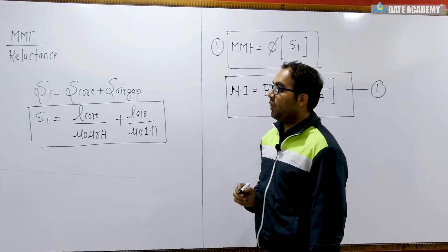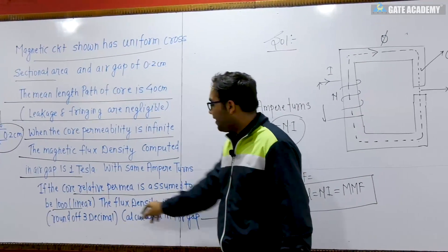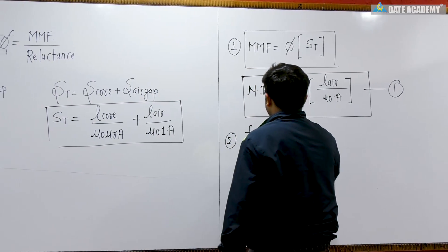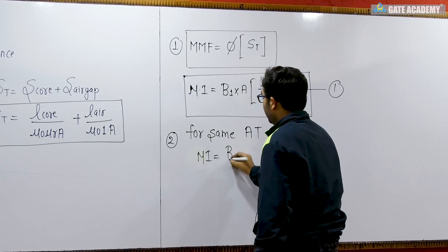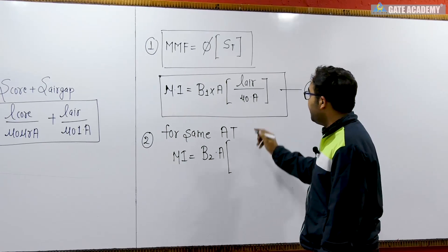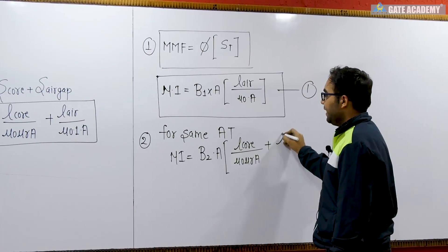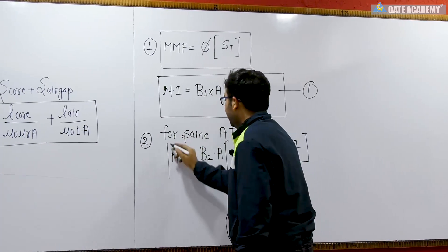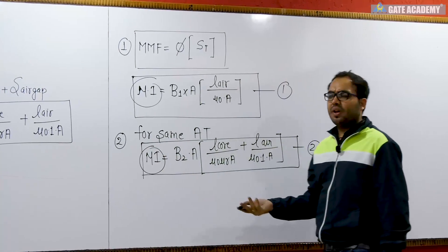For the second case, when the relative permeability is changed to 1000, we need to find the flux density rounded off to 3 decimal places. For the same ampere turns — we are not changing the ampere turns, so MMF is still constant — MMF equals the new flux density times area times the new total reluctance, which now includes both core and air gap reluctance terms.